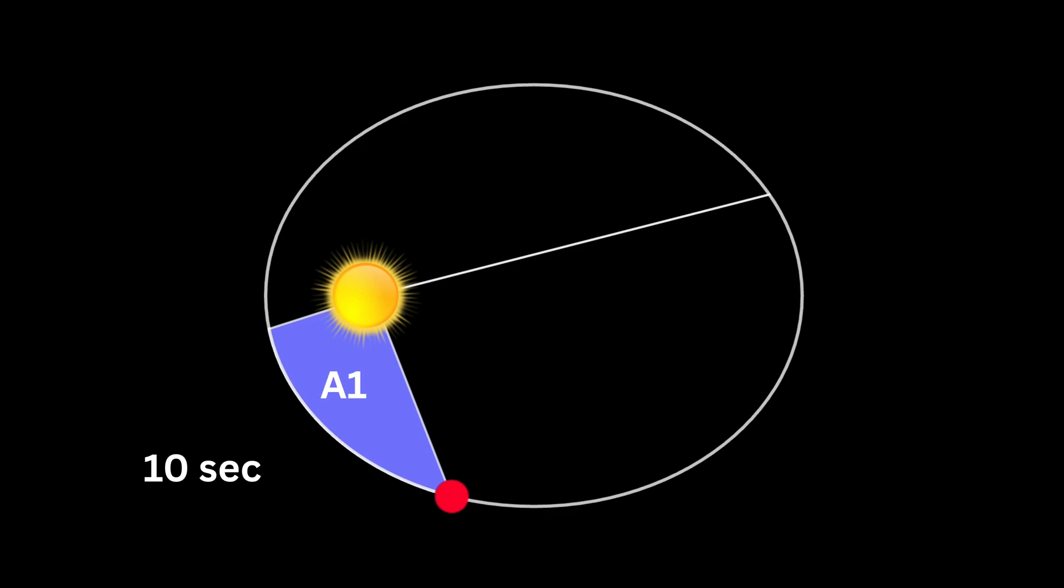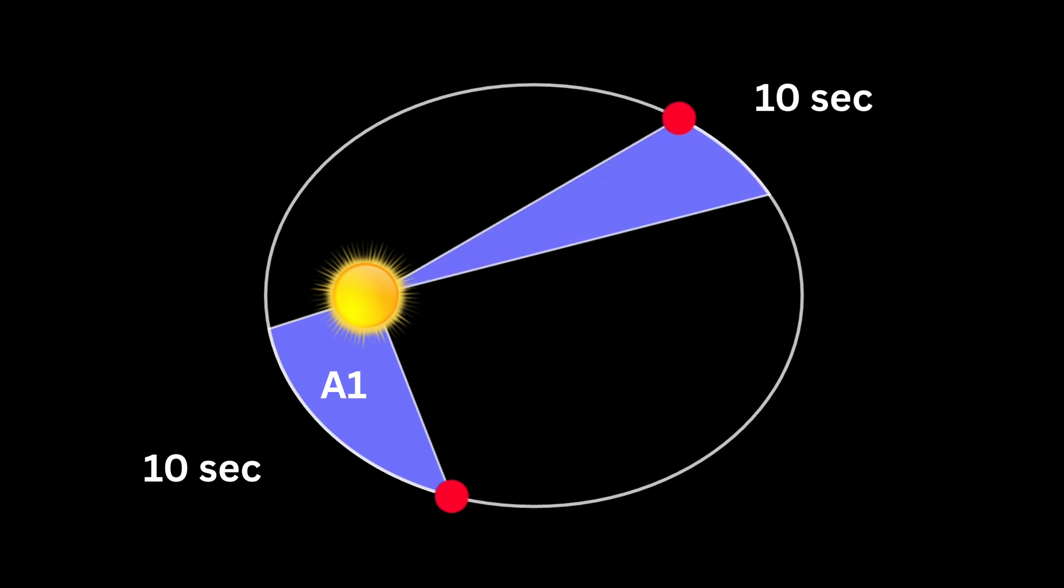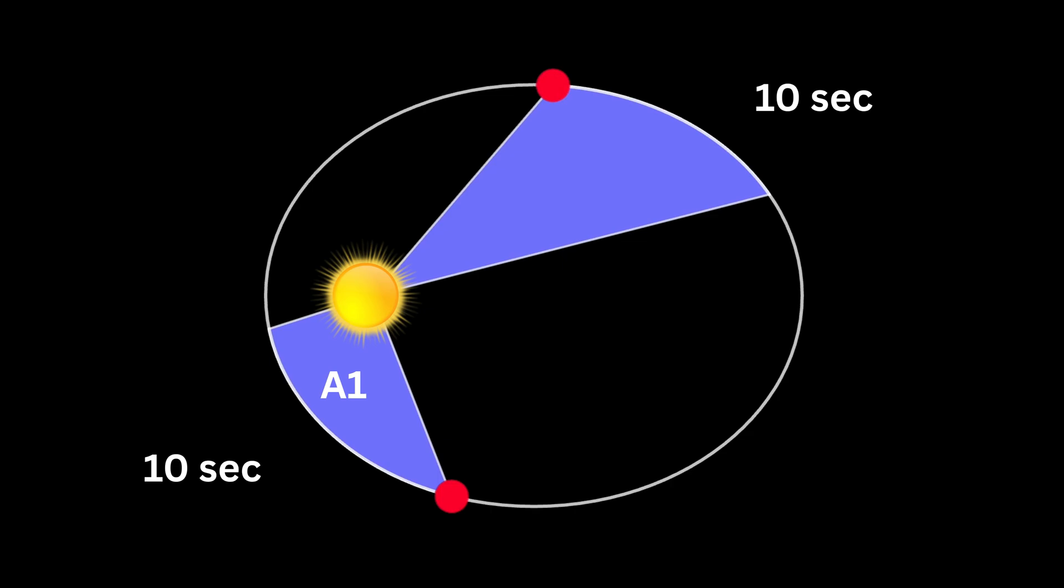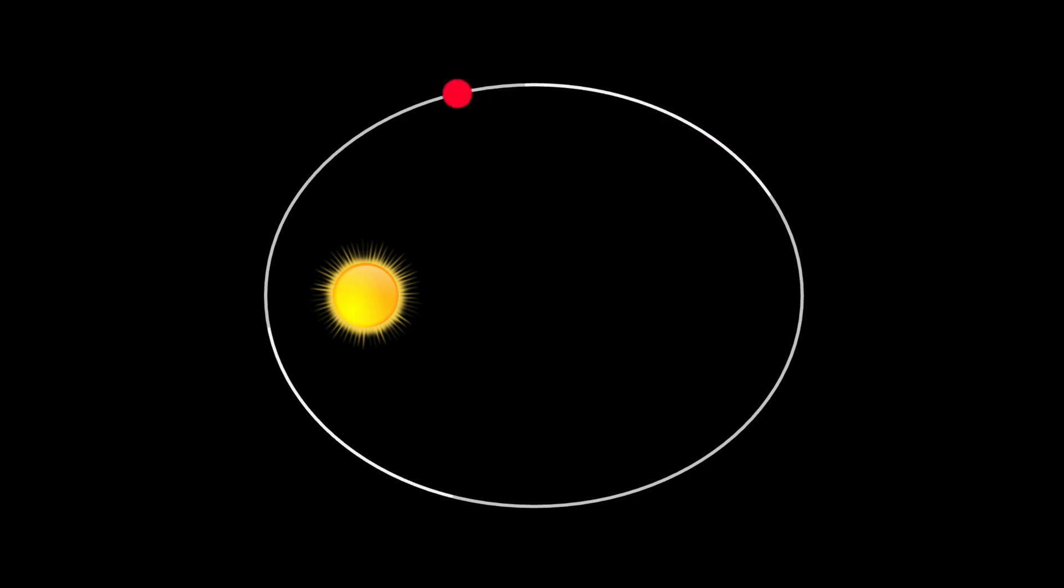Now if the same planet is farther away and again takes 10 seconds to move between two points, the area swept by it, say A2, is exactly the same as A1. The practical consequence is that a planet does not travel at a constant speed. It moves faster when it is nearer the sun, because in the same time interval distance covered is more, and it is slower when it is farther away, just enough so that those area slices stay equal.